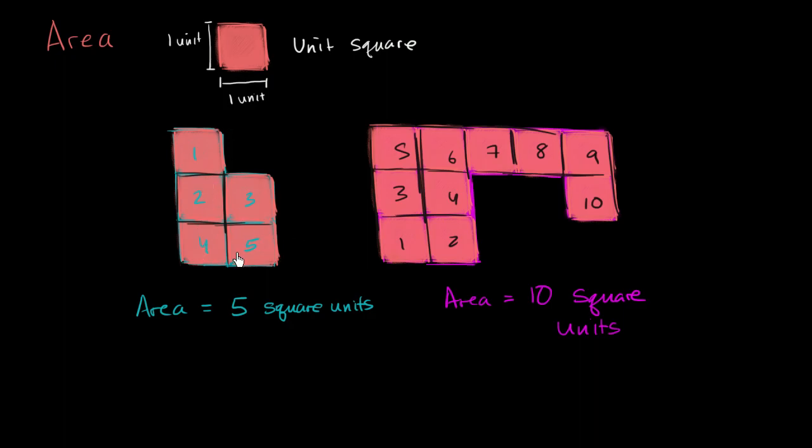This thing has an area of five square units. This thing has an area of ten square units. So this one, we can actually say, has twice the area. The purple figure had twice the area. It's ten square units as the blue figure. It takes up twice the amount of space on the screen.